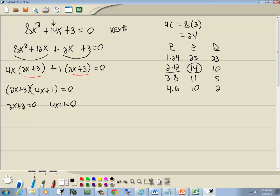And then we're going to solve each one. So this is just a linear equation. Take 3 over, becomes a negative 3. Divide both sides by 2, and we get x is equal to negative 3 halves.